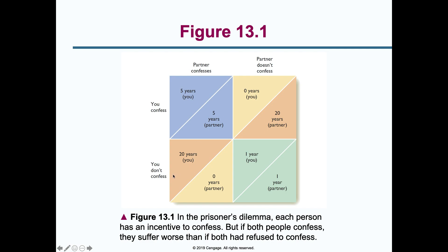In the bottom-left, if you don't confess but your partner does, the reverse happens: your partner is let off and you receive 20 years. However, if neither of you confesses, each receives only one year in prison. Interestingly, if both people confess they suffer worse — five years each — than if both had refused to confess, which results in only one year each.